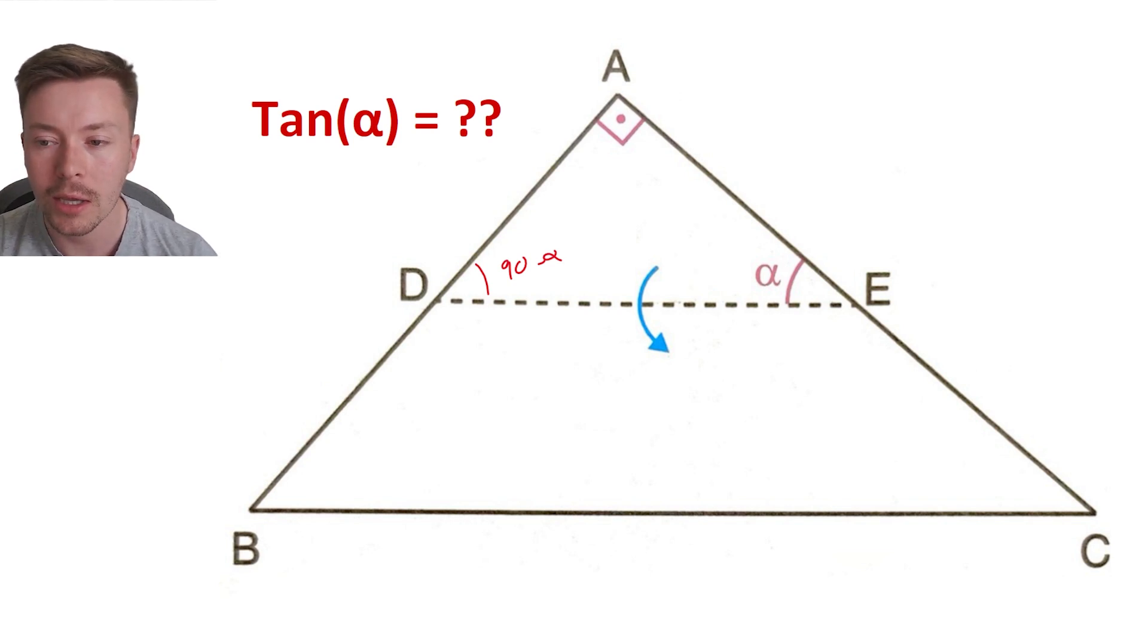The next thing is I am going to label the bottom left and right angles of the larger triangle. Now they must be the same because they're corresponding angles. We've got parallel lines where the fold is and at the base of that triangle, so they must be equal angles.